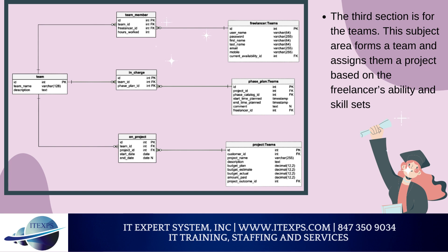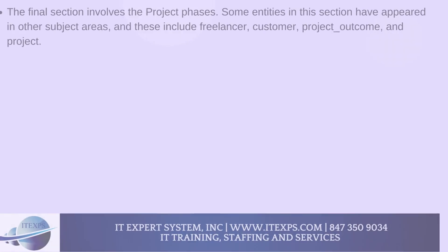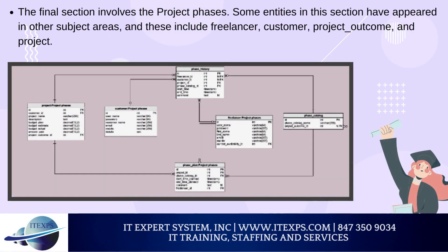Other tables in the Teams section include Team Member, In Charge, Freelancer, Phase Plan, and Project. The final section involves the Project Phases. Some entities in this section have appeared in other subject areas, and these include Freelancer, Customer, Project Outcome, and Project. The new entities in this set include Phase History, Phase Catalog, and Phase Plan.